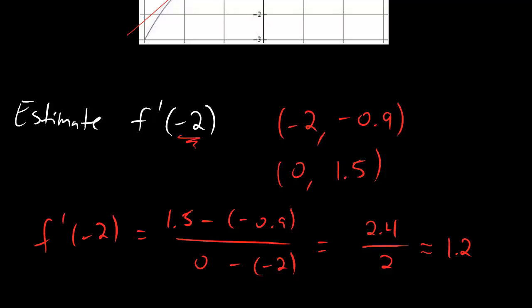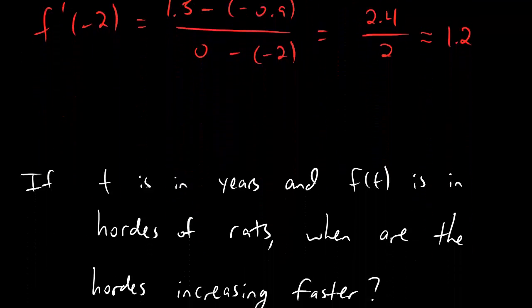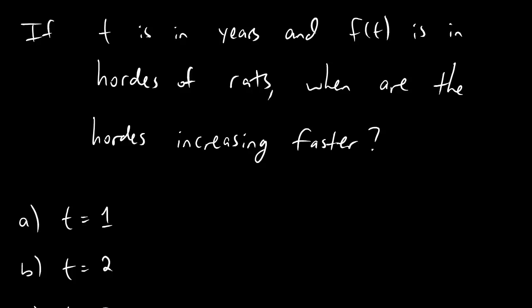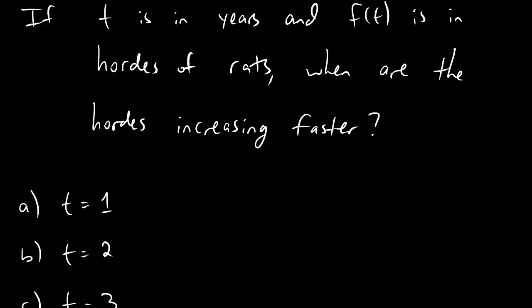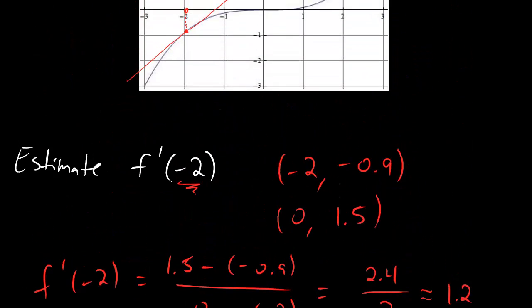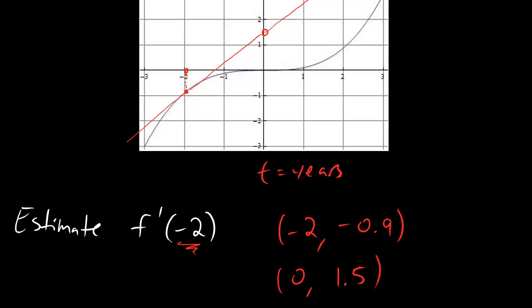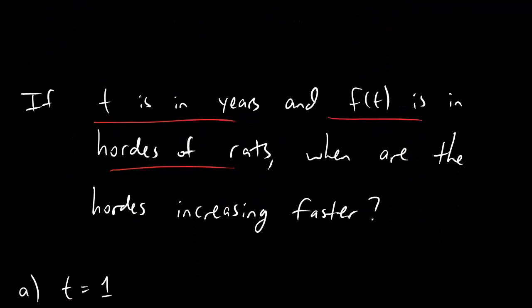Now, dudes, this estimation is something you may be asked to do, but more likely you're going to be asked to do something that doesn't involve as precise numbers, but still involves something that's comparative. So here's what I mean. Maybe you see this question that says, if t is in years and f of t is in hordes of rats, then when are the hordes increasing faster? And maybe the options that we have are time 1, 2, or 3. So between these three points, we want to figure out when the rat hordes are increasing the fastest. And of course, when I say t is in years and f of t is in hordes of rats, I mean that that applies to the graph that we have above. So we can go up here and we can say t equals years and f of t equals rats. And now what we want to do is look at this guy and find out when we have the fastest increase. So let's think about that for a second. And let's also remember that we only really care between these three points.